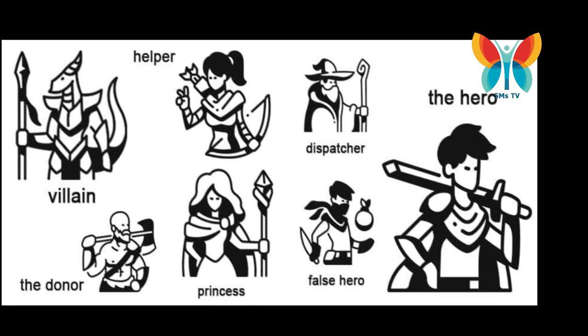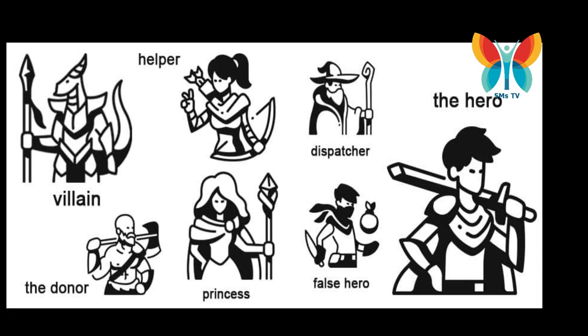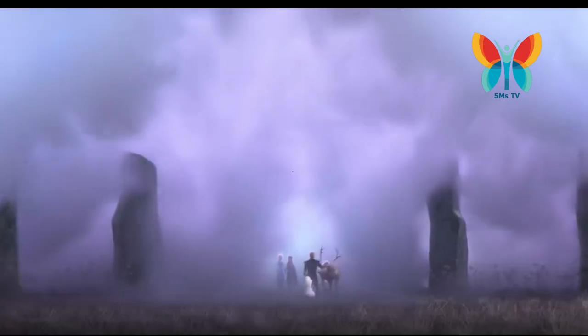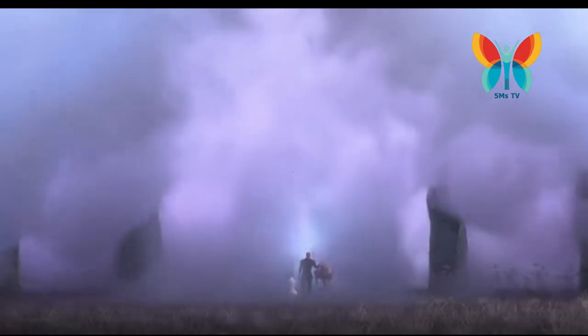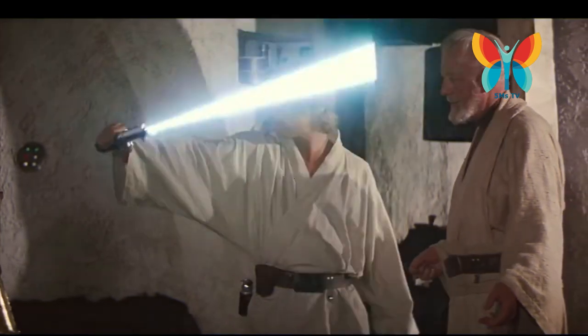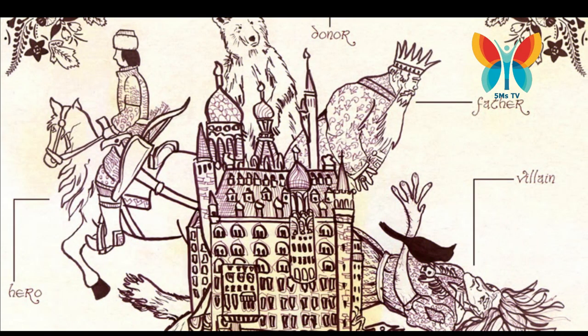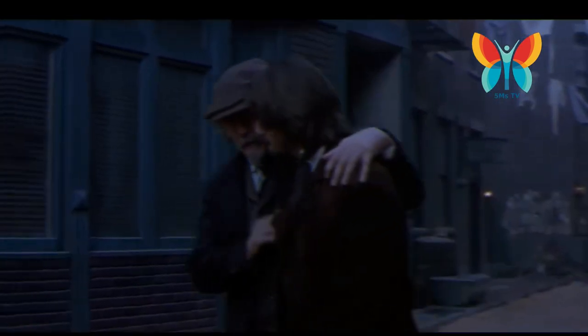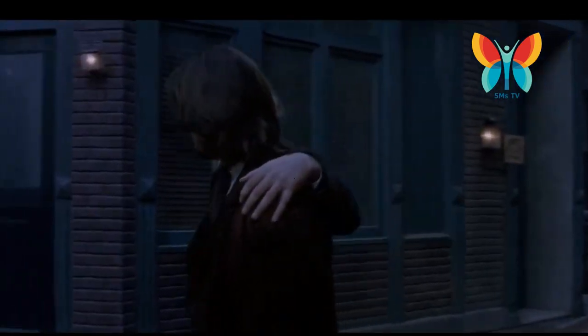1. The hero — this character is the central figure of the story and is usually the one who sets out on a journey or quest. 2. The villain — the villain is the character who opposes the hero and creates conflict. 3. The donor — the donor is a character who provides the hero with an important magical item or piece of information that helps him on his journey.